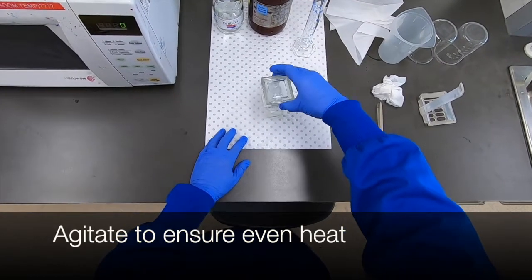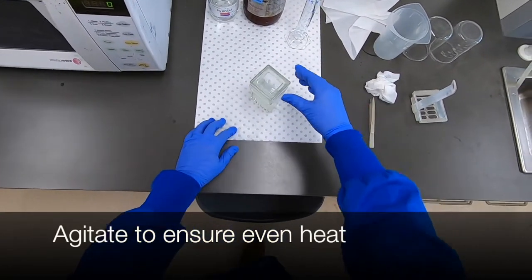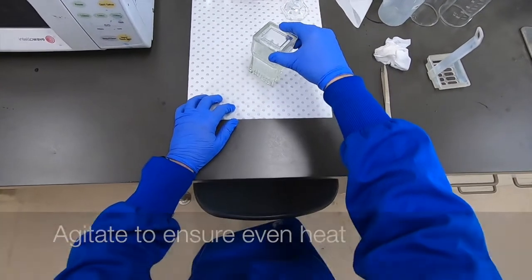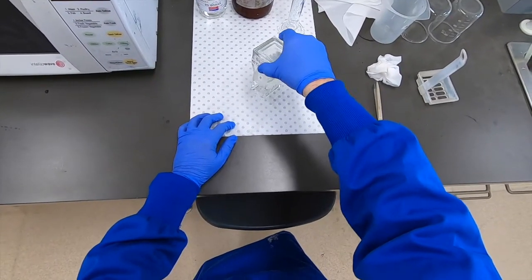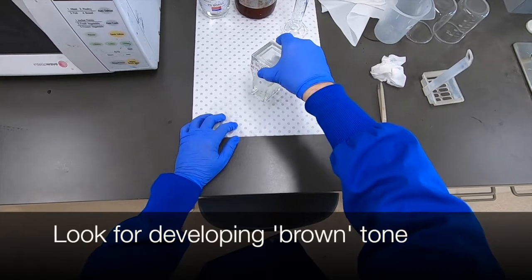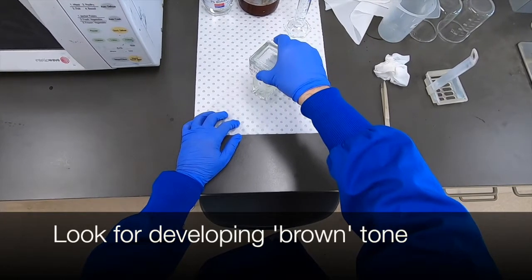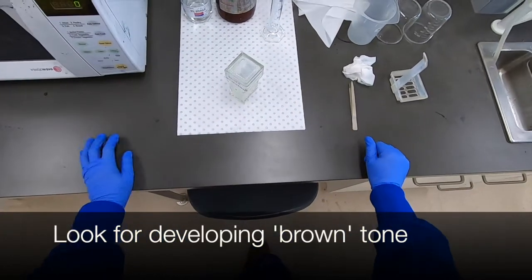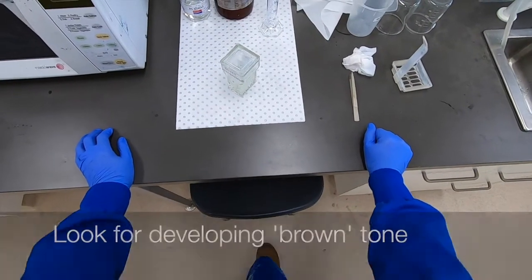And you need to agitate the Coplin jar in order to ensure even distribution of heat throughout the Coplin for even staining of your tissue sections. What you're looking for is the development of a brown tone within the tissue and often within the sides of the Coplin jar itself.